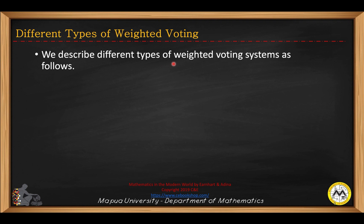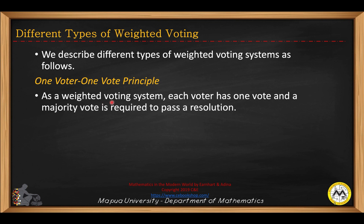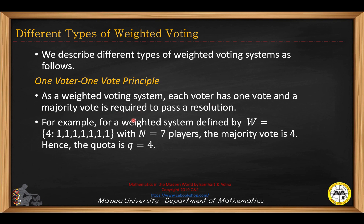We describe different types of weighted voting systems as follows. One voter, one vote principle: as a weighted voting system, each voter has one vote, and a majority vote is required to pass a resolution. So in this example, you have seven voters here. The majority is 3.5 plus one, so four. In this case, the majority is four, so the quota has to be four.